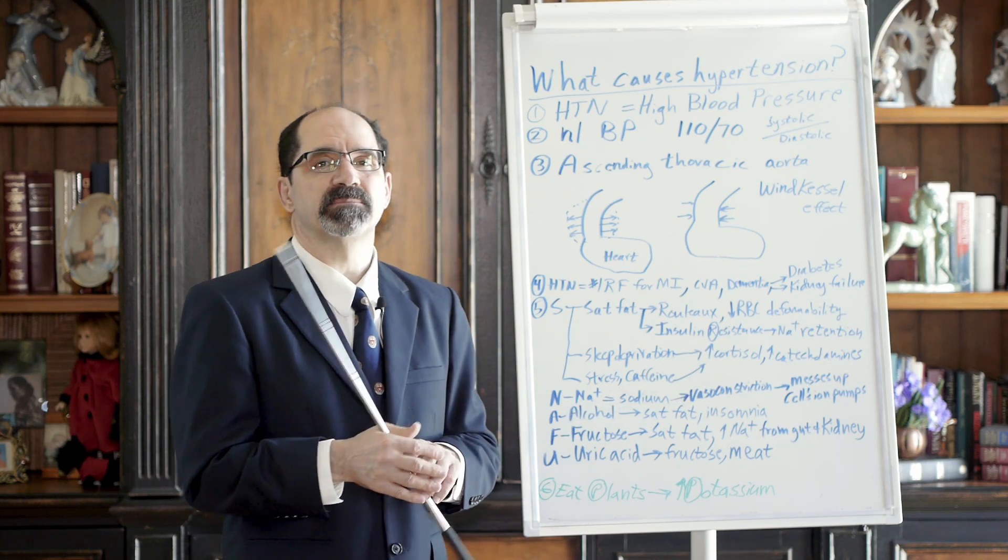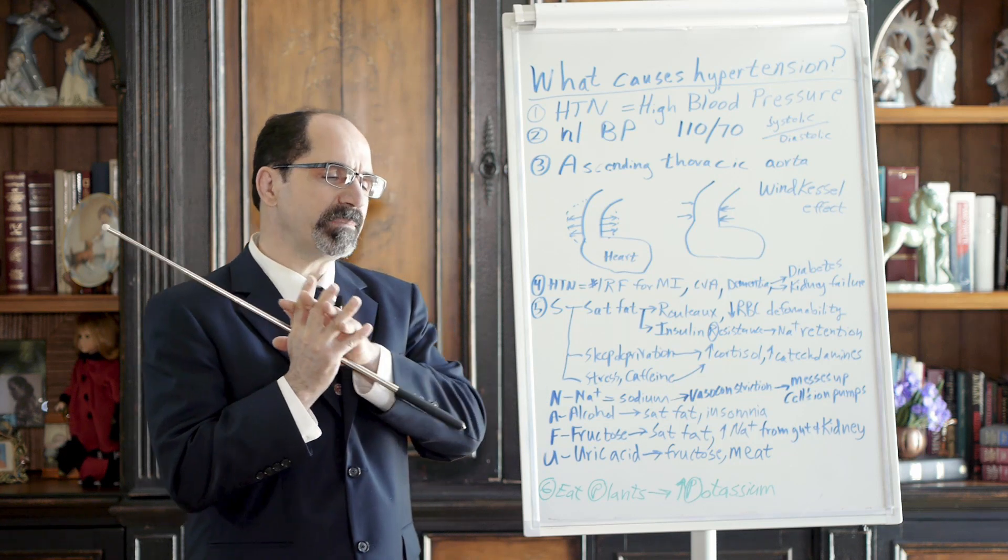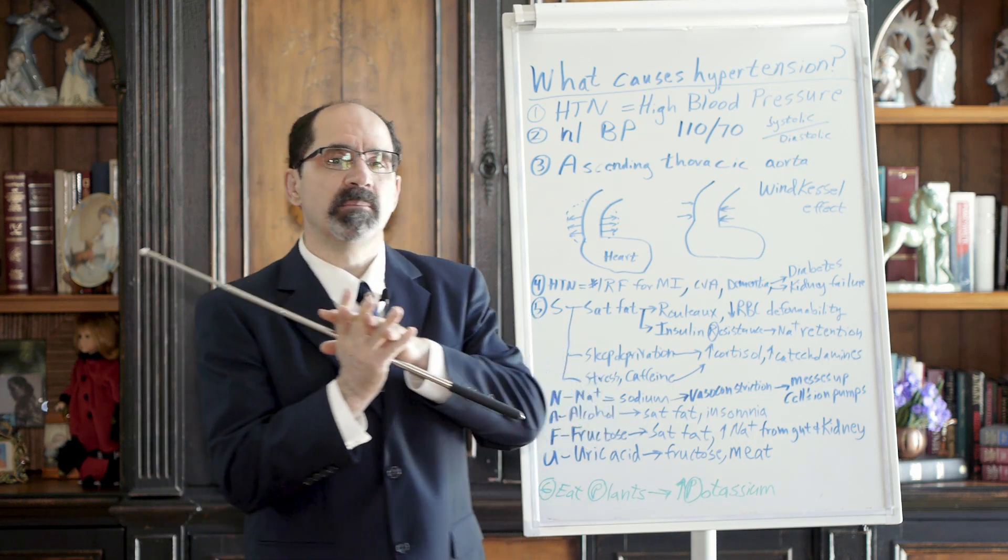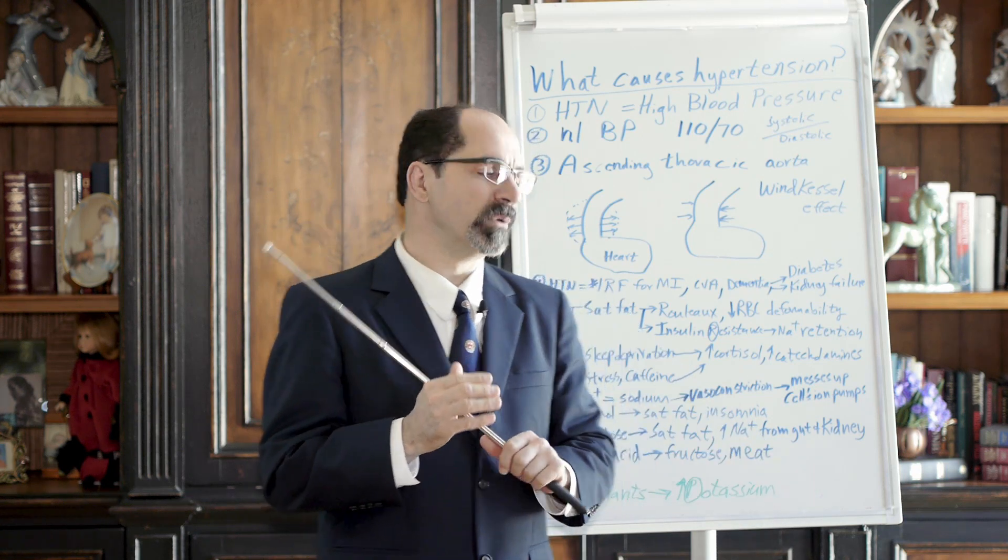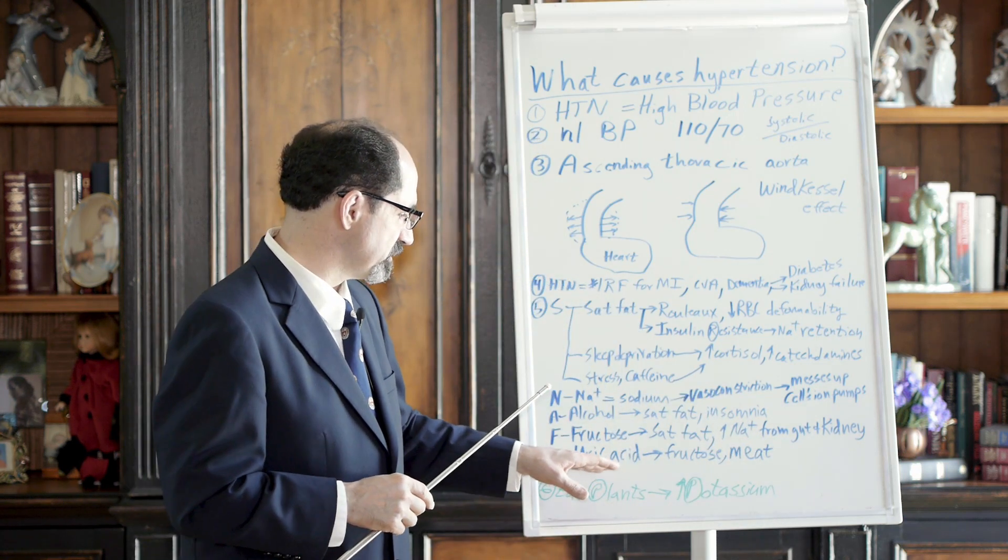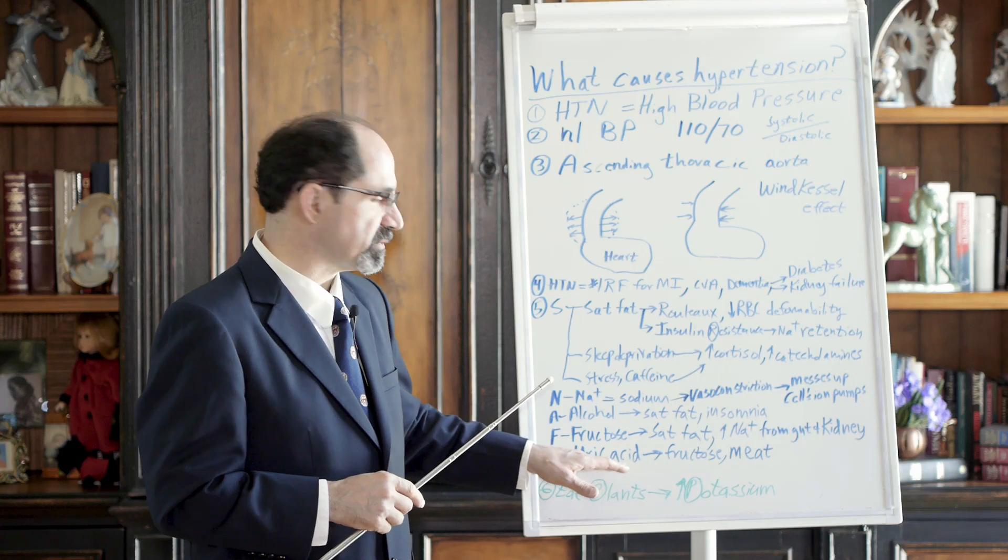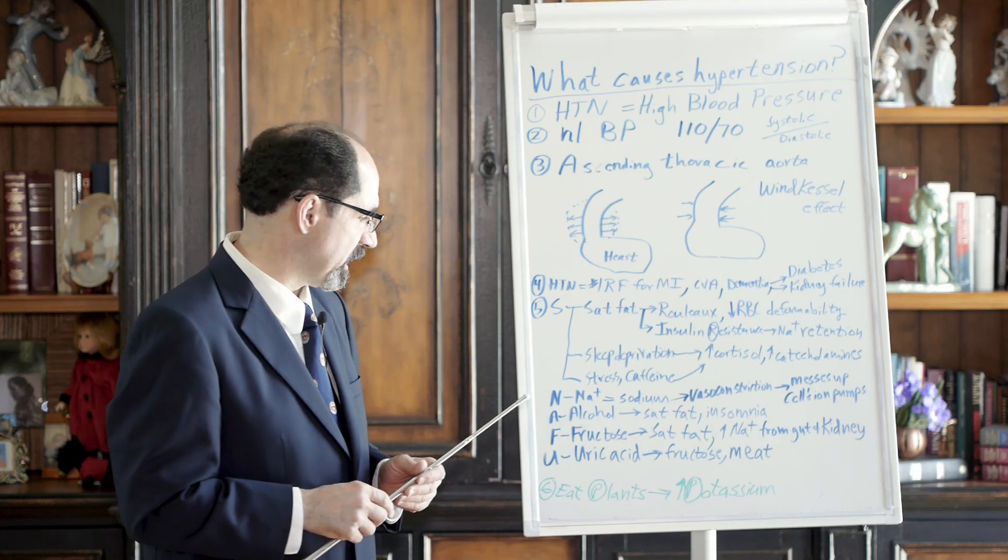Uric acid is also increased by fructose. Fructose uniquely, when it's metabolized by the liver, ATP is initially used to phosphorylate it. But that ATP then going to ADP subsequently gets degraded all the way down into AMP and eventually uric acid is the waste product from that. And uric acid also inhibits endothelial nitric oxide causing hypertension.